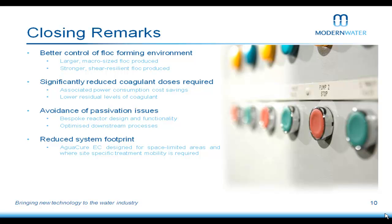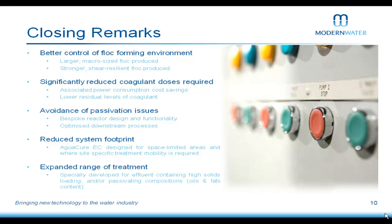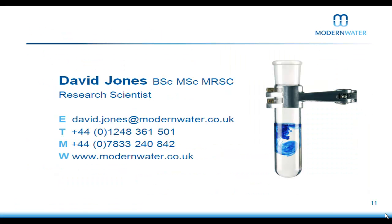In terms of footprint, the cell I showed earlier houses an electrode pack weighing about 15 kilograms, measuring 26 cm by 5.5 cm — compare that to a 2,000-litre tank of ferric chloride; the footprint difference is considerable, allowing retrofit into smaller systems where space is an issue. Finally, our optimised downstream processes give us an expanded range of treatment, enabling us to treat wastewater that would normally be problematic for conventional EC, such as those with fat suspensions. Thank you for listening.